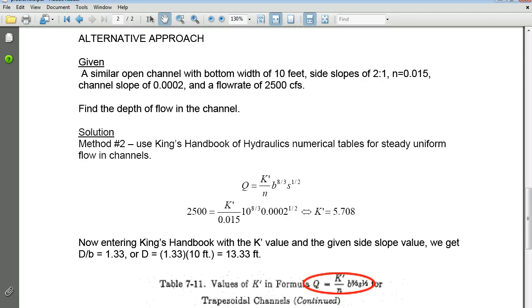Here, what we have is a bottom width of 10 feet. We have side slopes of 2 to 1. We have a Manning's n that's commensurate with what we had before. We have a channel slope that's much flatter than the earlier version, and we have a flow rate of 2500 CFS. This particular problem is the same geometry, the same everything, except the units are now customary instead of metric, and the dimensions are different. We need to find the depth of flow in the channel just like we did before.